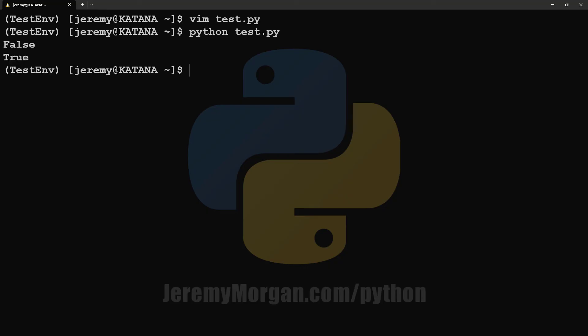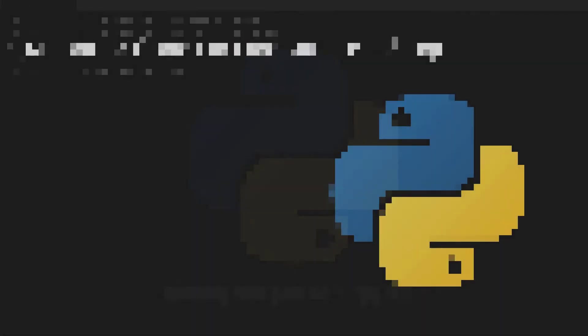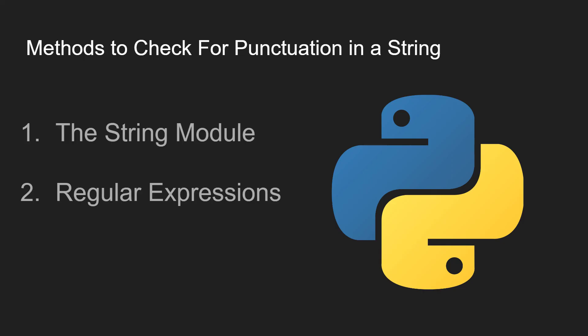And there we have it. We once again have accurate results. Now, in this video we wanted to learn how to check for punctuation in a string in Python. We looked at using the string module, using regular expressions, and using the isAlpha function. All three ways will get you what you need here. By understanding how to check for punctuation in Python, we can improve our coding skills and write more efficient and effective code. If you want to learn more about Python, subscribe to my YouTube channel.